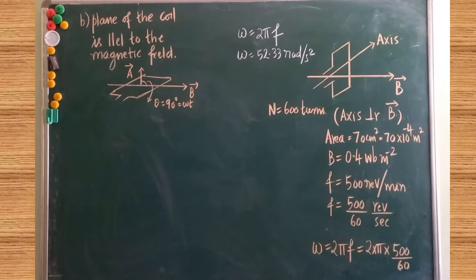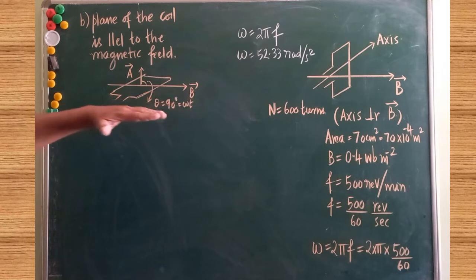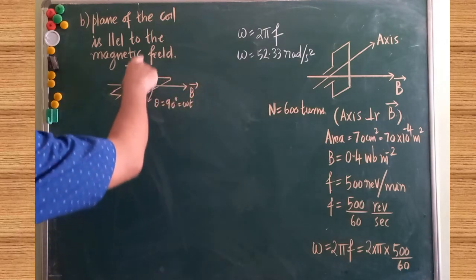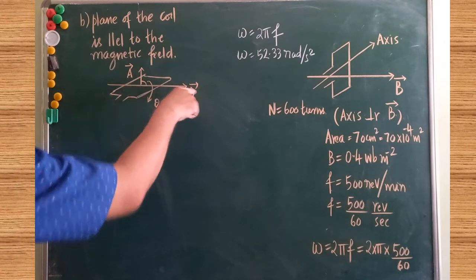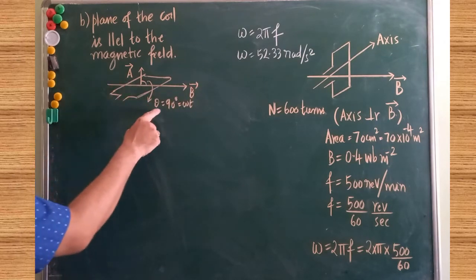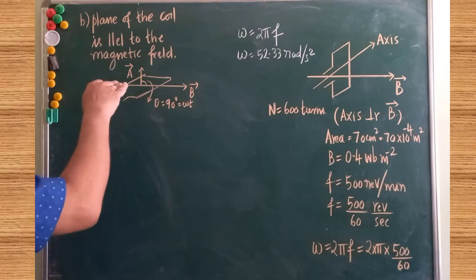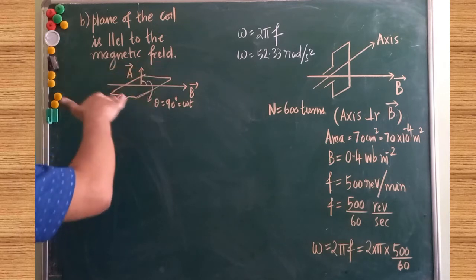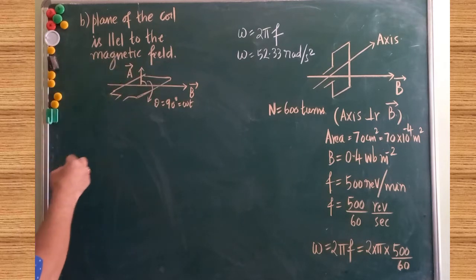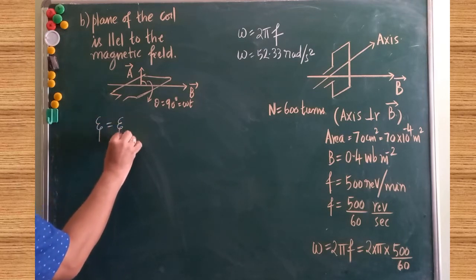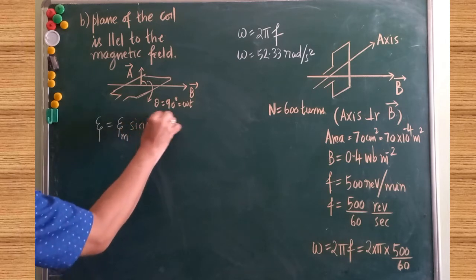Now for the second case: the plane of the coil is parallel to the magnetic field. When the plane of the coil is parallel to B, the area vector of the coil is perpendicular to B. Therefore the angle between A vector and B vector is 90°, that is theta = ωt = 90°. We now calculate the induced EMF in this position.